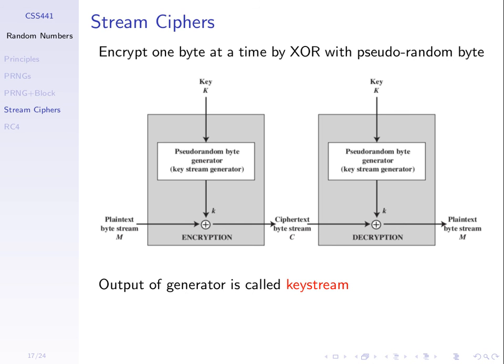The output is ciphertext, which we send across the network. The receiver, who has the same key, uses the same pseudo-random number generator. With the same input and same algorithm, they get the same key stream values. XORing ciphertext C with the same key stream k gives back the plaintext, because XOR-ing plaintext P with k gives C, and XOR-ing C with the same k gives P XOR k XOR k, which equals P — the two k's cancel out.